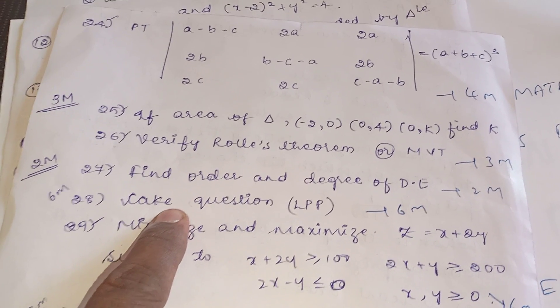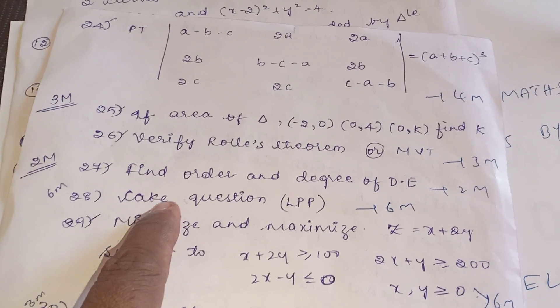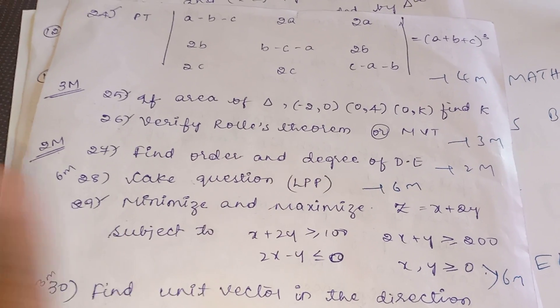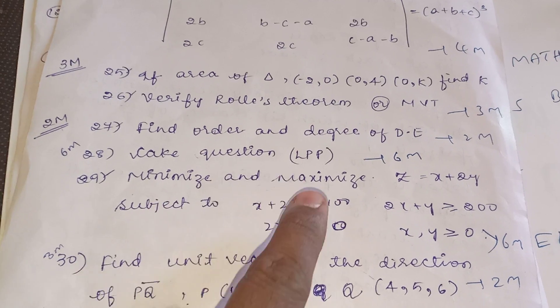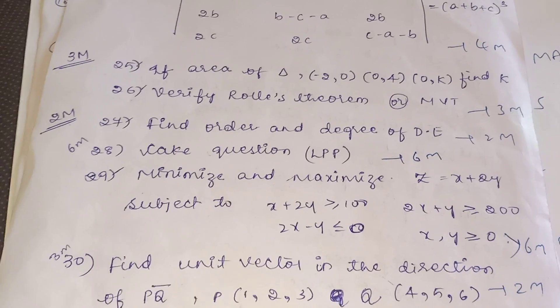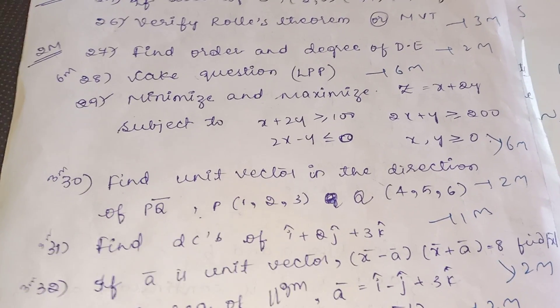Order and degree, compulsory question in differential equation for two marks. In LPP, formulation question maybe. If they given verbal question, they can give formulation question in second question. That question they can ask, or else they will say maximize or minimize the equations. They can give three equations and you can maximize and minimize. This is for six marks.